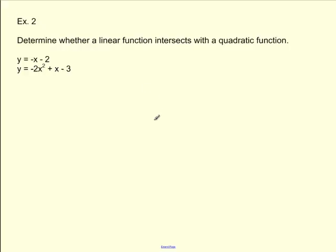Here's example two: determine whether a linear function intersects with a quadratic function. Here are our two functions — y equals negative x minus 2, and y equals negative 2x squared plus x minus 3. We have one linear and one quadratic function, and we just need to figure out if they intersect. It doesn't say where they intersect, just if they intersect.